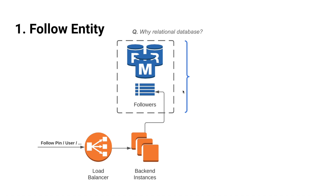What should happen when a user clicks on the follow button on a pin or a user? We should create an endpoint on the backend server to store the follow relationship. When the frontend — mobile or web — hits this endpoint, it would persist the follow relationship in the database and return a success response back to the user, or an error response otherwise, for example on network issues or an invalid request.